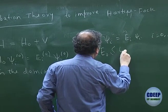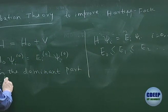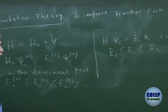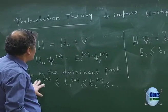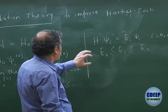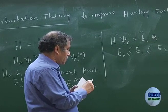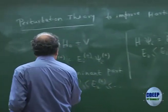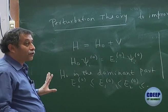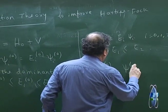Such that E₀ ≤ E₁, etc. Similarly I can do the ordering for H₀ saying that E₀⁰ < E₁⁰ < E₂⁰ and so on. Then we are saying that since H₀ is the dominant part of the Hamiltonian, E₀⁰ is a good approximation to E₀, and ψ₀⁰ is a good approximation to ψ₀ — and we are only talking of ground state perturbation theory, so we will not bother about the other approximations.